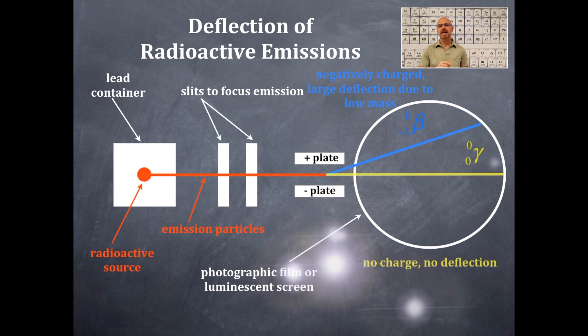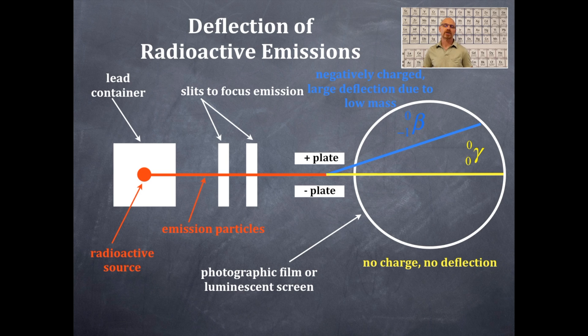The next one here is a gamma emission. Now, gamma particles do not have a charge, either positive or negative. They're neutral. Therefore, they're going to go straight and stay linear the entire time and be detected exactly on the other side.